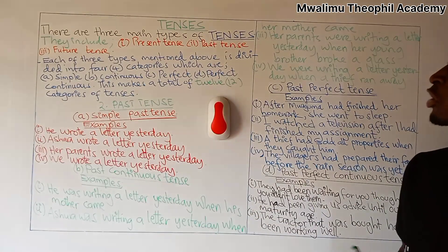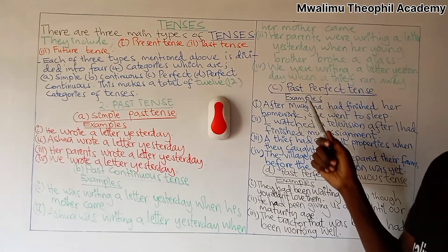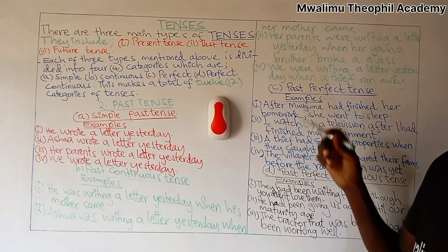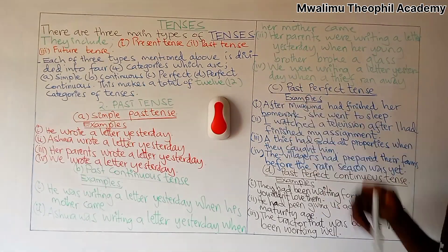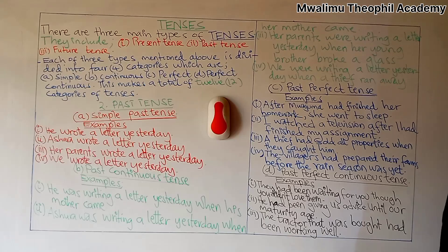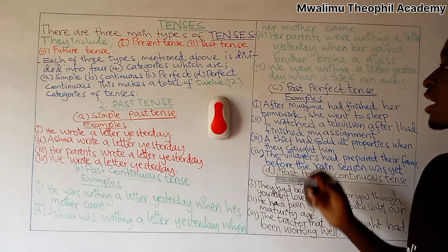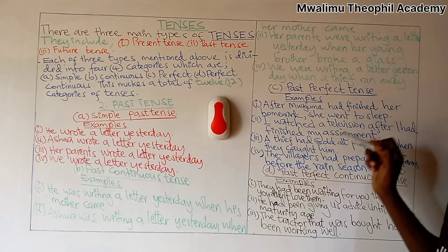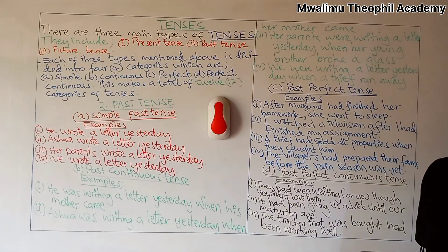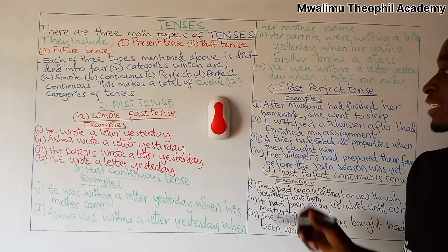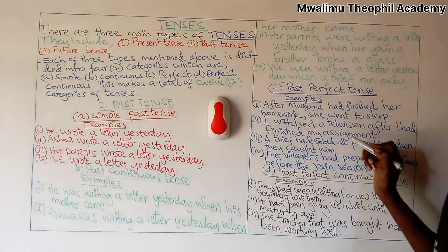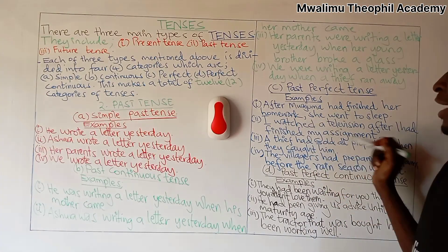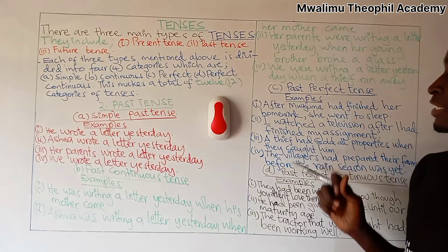After we have seen these two first categories, let us see our third category of past tense, which is past perfect tense. The following are examples of sentences which are in past perfect tense. Our first sentence: after Majuma had finished her homework, she went to sleep. Our second sentence: I watched television after I had finished my assignment.